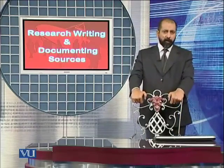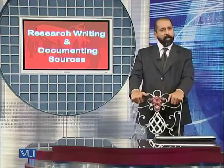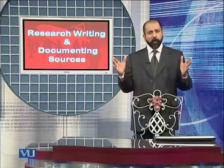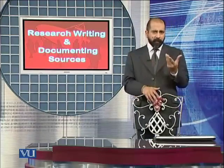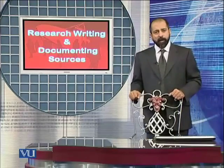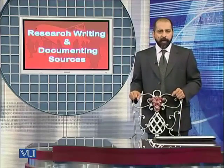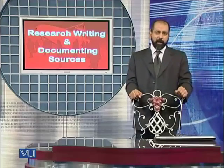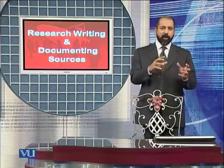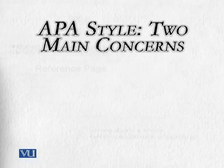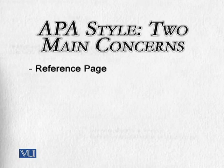I named two research formats: number one APA, and number two MLA. They have lots of similarities and a few differences. I'll first talk about APA, and then towards the end of today's lecture I'll try to compare APA and MLA. APA, as I said, stands for American Psychological Association. It has two major focuses: number one, the reference page — it helps you prepare your reference page — and number two, parenthetical citations. What is the difference between these two?